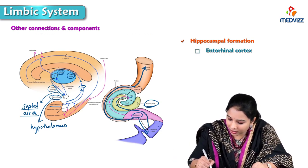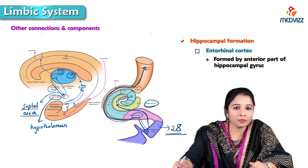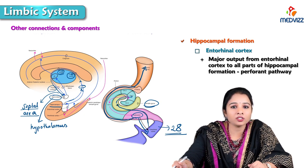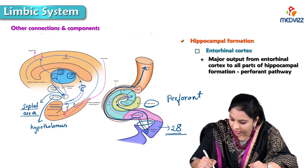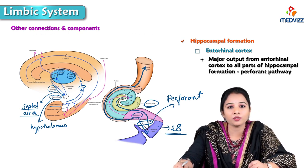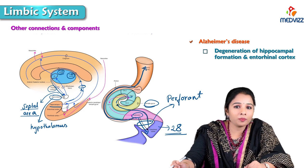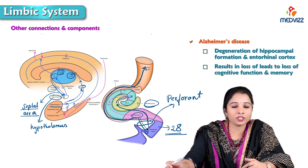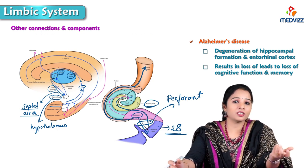The entorhinal cortex is Brodmann area 28, formed by the anterior part of the hippocampal gyrus, concerned with memory and associative components. The major output of the entorhinal cortex to all parts of the hippocampal formation is via the perforant pathway — a smaller component of projection fibers. In Alzheimer's disease, degeneration of the hippocampal formation and entorhinal cortex results in loss of cognitive function and memory.